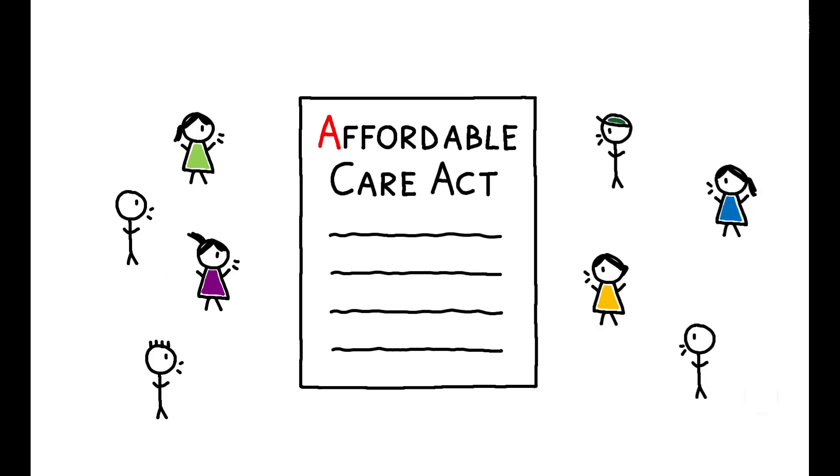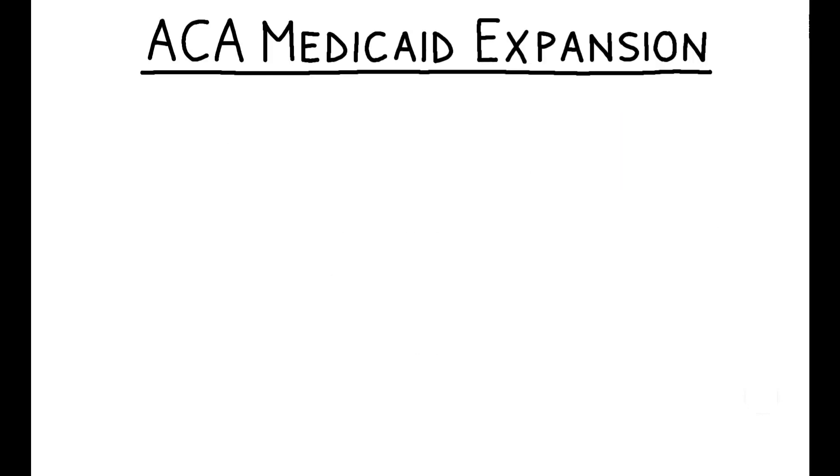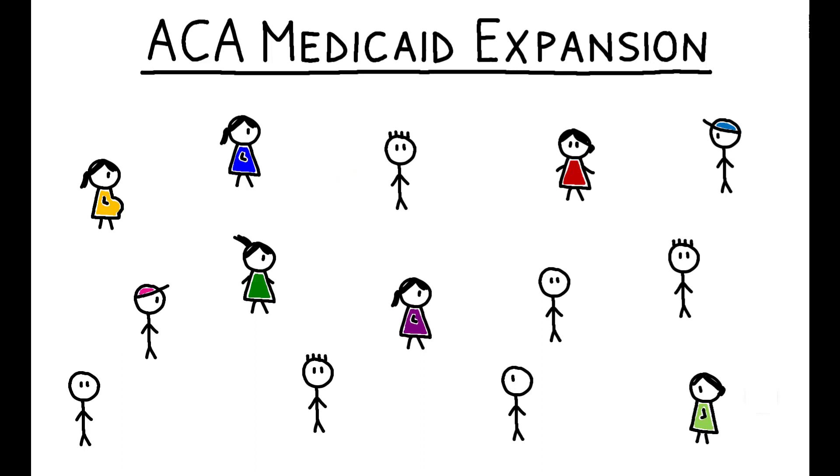In 2014, the ACA, among other things, drastically expanded the Medicaid program by adjusting its eligibility requirements. Prior to the reform, coverage was restricted to pregnant women, adults with disabilities, and very low-income parents.